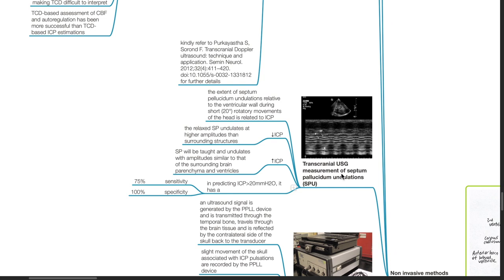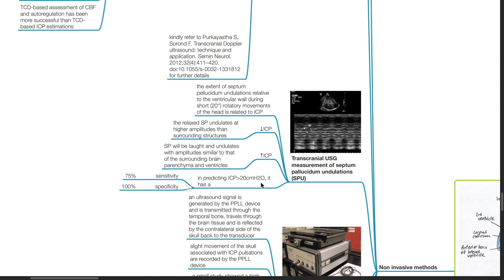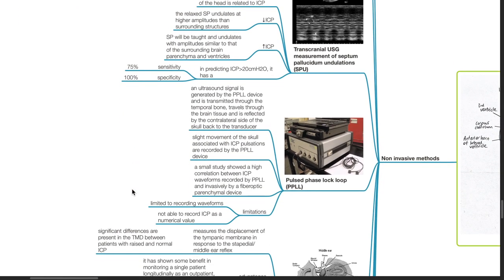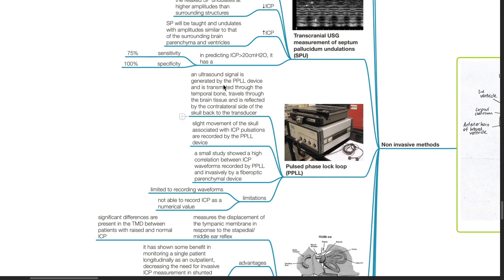Transcranial ultrasound measurement of septum pellucidum undulations. The extent of septum pellucidum undulations relative to the ventricular wall during short 20-degree rotatory movements of the head is related to ICP. In decreased ICP, the relaxed SP undulates at a higher amplitude than surrounding structures. As ICP increases, SP will be torqued and undulates with amplitude similar to that of the surrounding brain parenchyma and ventricles. In predicting ICP of more than 20 cm H2O, it has a sensitivity of 75% and specificity of 100%. Pulsed phase locked loop PPLL: an ultrasound signal is generated by the PPLL device and is transmitted through the temporal bone. It travels through the brain tissue and is reflected by the contralateral side of the skull back to the transducer. Slight movement of the skull associated with ICP pulsations are recorded by the PPLL device. A small study showed a high correlation between ICP waveforms recorded by PPLL and invasively by a fiber optic parenchymal device.